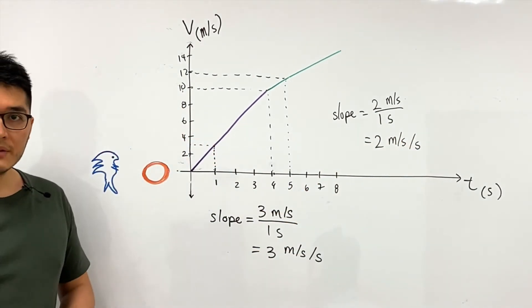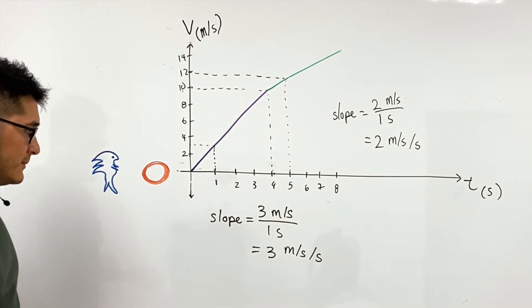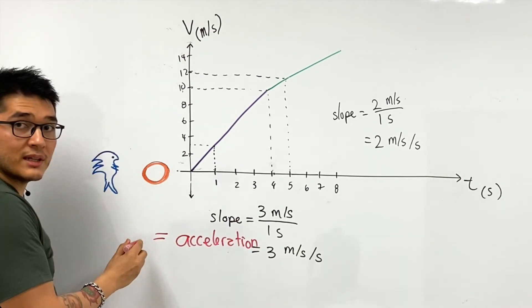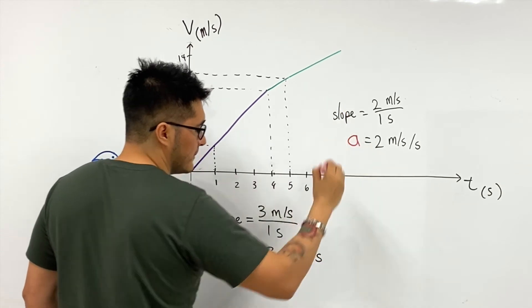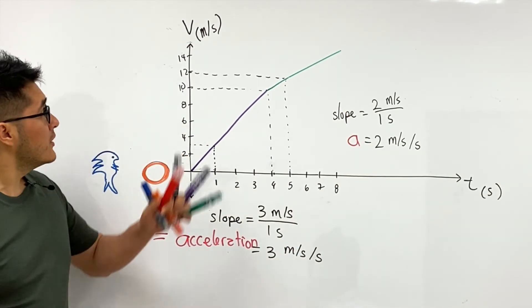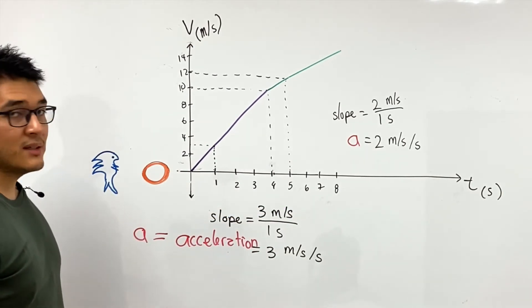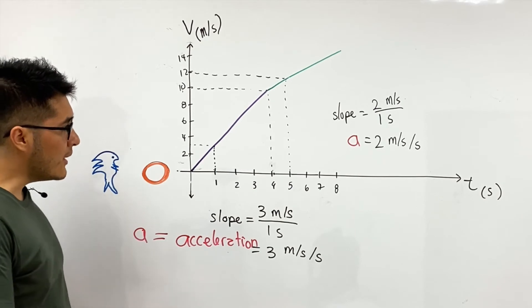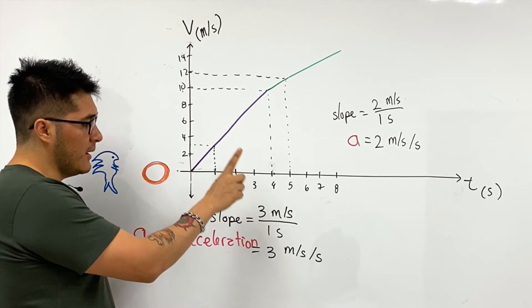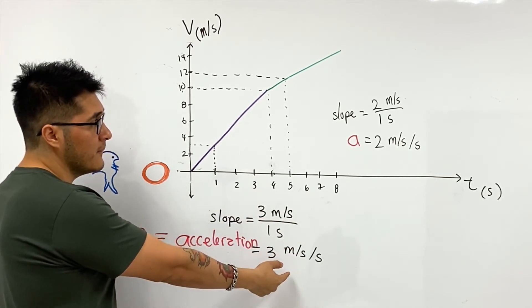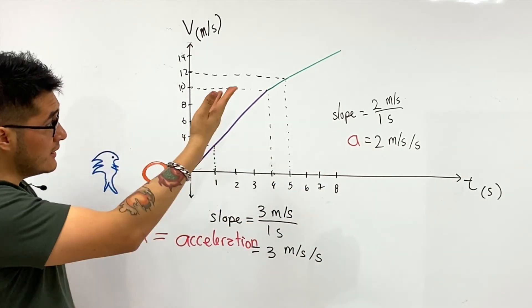So how quickly velocity changes with time, that's going to be called acceleration. And we're going to use the letter a to describe it. So here we have the acceleration. The acceleration is going to be the slope of the velocity versus time graph which just tells us how quickly the velocity is changing with time. So now we can have a better story: Sonic is speeding up three meters per second each second that goes by in the first part and then two meters per second per second in the second part.